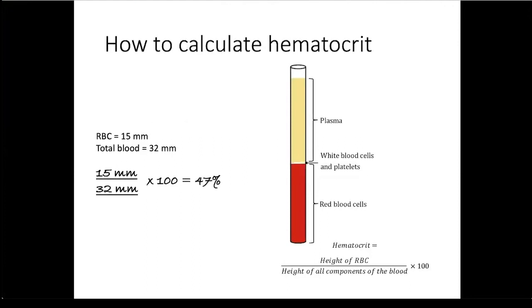The equation for calculating the hematocrit is down at the right corner of this slide. It is the height of the red blood cell column divided by the height of the total blood column times 100.